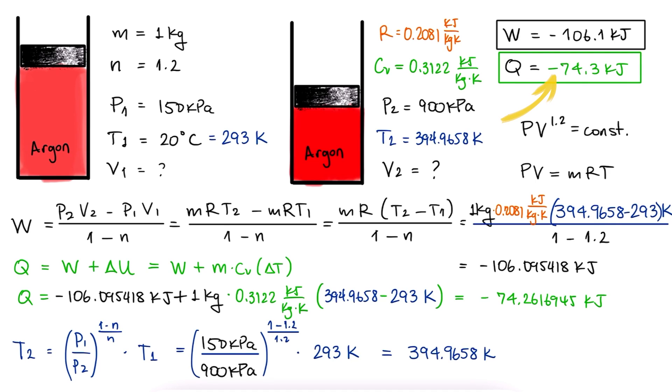The negative sign shows us that the heat is coming out of the system. Same with the work, the negative sign shows us that the work is coming into the system, pushing down the piston.